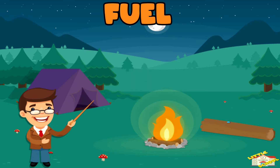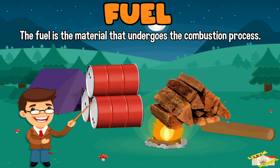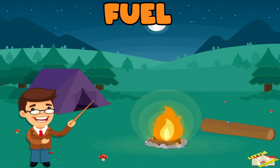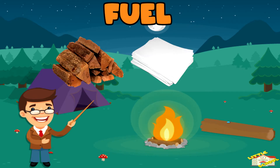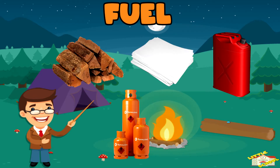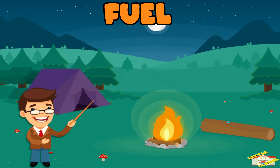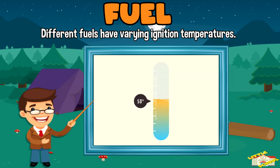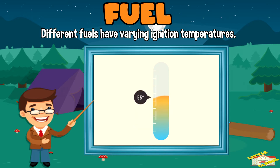Fuel is the material that undergoes the combustion process. Common fuels include wood, paper, gasoline, natural gas, and even some metals. Different fuels have varying ignition temperatures, which is the temperature at which they start burning.